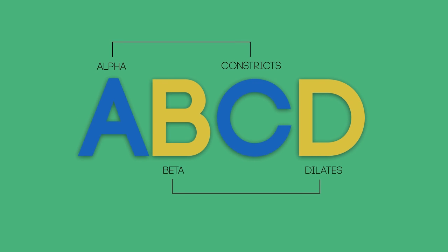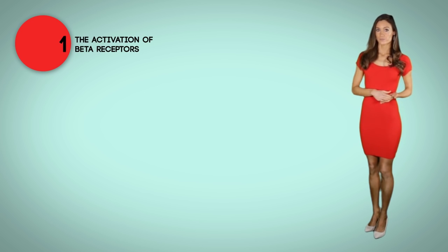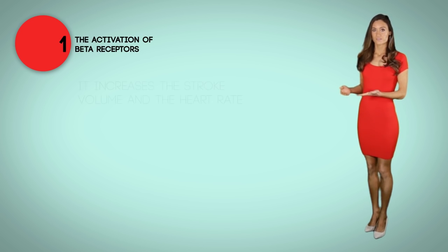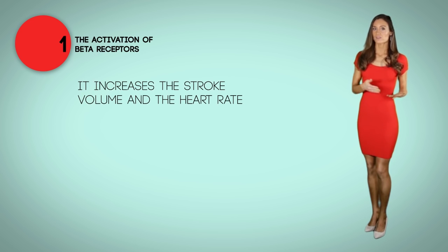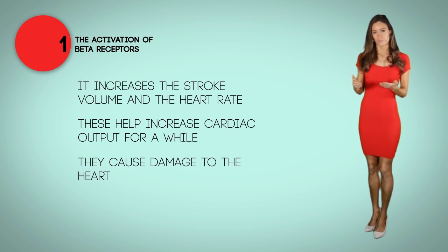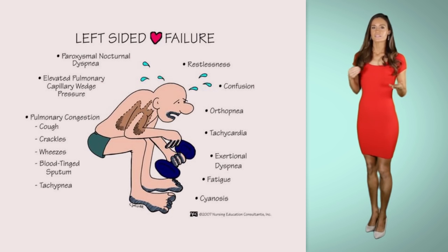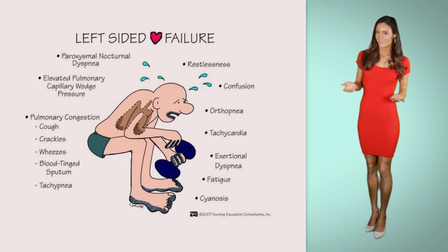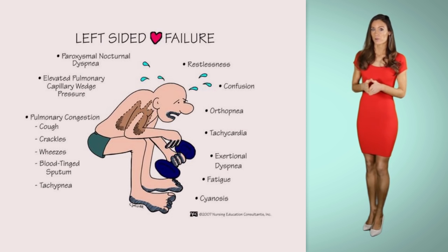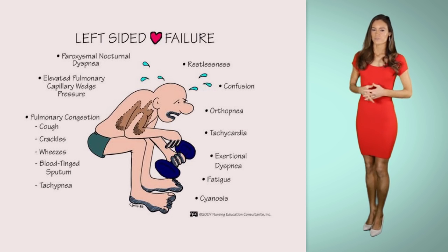Alpha constricts and beta dilates. Once the sympathetic nervous system is activated, it has three main effects. The first is activation of beta receptors, which increases stroke volume and heart rate, helping increase cardiac output for a while. However, eventually they cause damage to the heart, which can cause pulmonary congestion — hence left-sided heart failure. A tip to remember: left-sided heart failure equals lungs. This is why beta blockers are given — these medications block the beta receptors, slowing down the heart rate and increasing stroke volume, ultimately stopping the damage from being done to the heart.